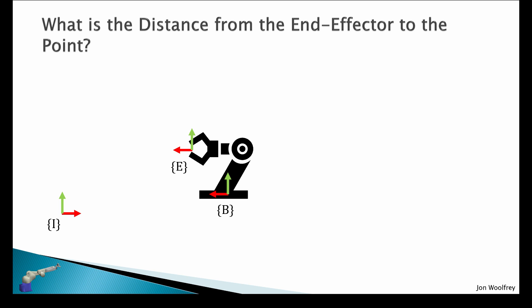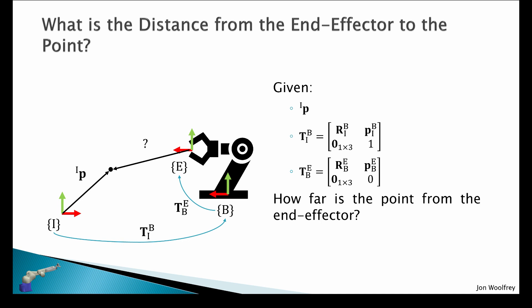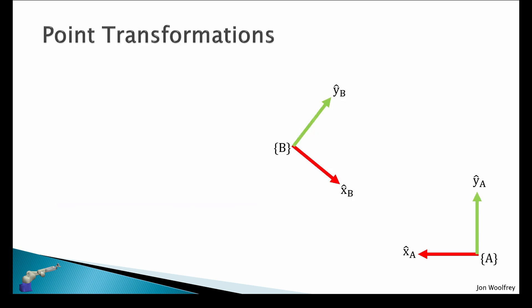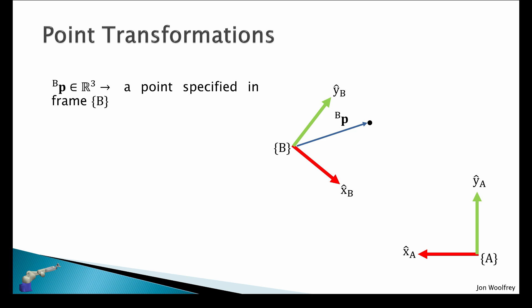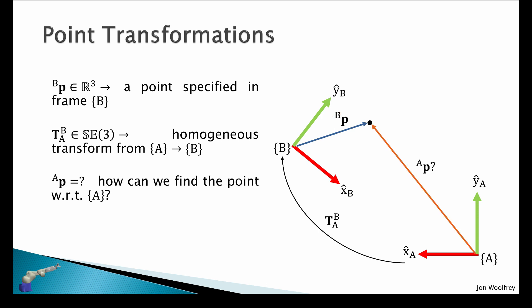Another thing we might want to consider is: what is the distance from the end effector to a point? Given a point specified in the inertial frame with superscript i, we have the transform from inertial to base and the transform from base to end effector frame. How far is the point from the end effector frame — in what direction should the robot move? Now we have to consider point transformations. We define a point in frame b, but we can't just multiply a 4x4 transformation matrix by a 3x1 vector — it's not going to work, so we need to do a bit of manipulation.